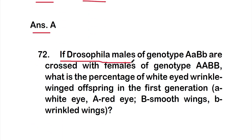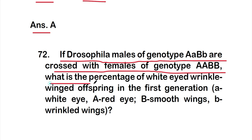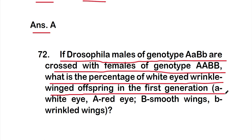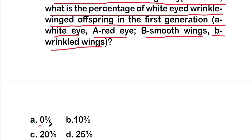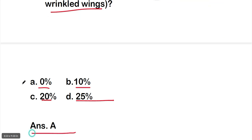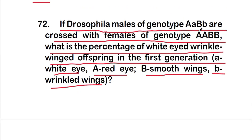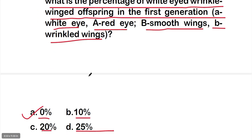Question 72: Drosophila males of genotype AaBb are crossed with females of genotype AB. Here, small a is white eye, capital A is red eye, capital B is smooth wing, and small b is wrinkled wing. What is the percentage of white-eye wrinkled-wing offspring in the first generation? Options: 0%, 10%, 20%, 25%. The right answer is Option A — 0%.